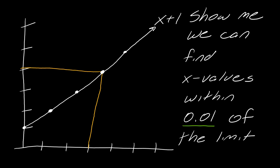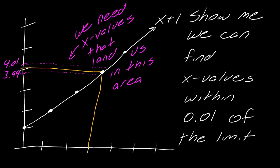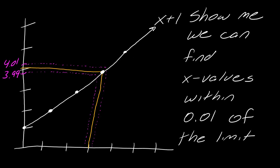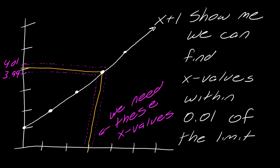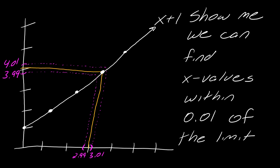We know the idea behind this, so I've got a slightly tighter region around my limit now. If I want to be within 0.01 of the limit, that means I want to be between 3.99 and 4.01. I can use the graph to figure out the corresponding x values. We need x values somewhere between 2.99 and 3.01, and then once again I can pretty easily find these values — we will be in that desired area around the limit.